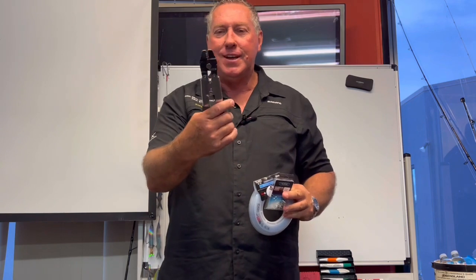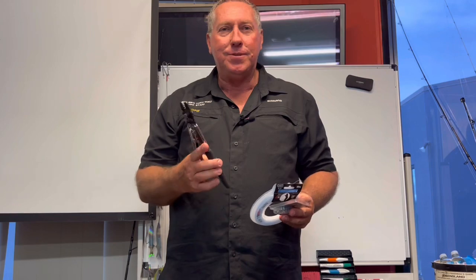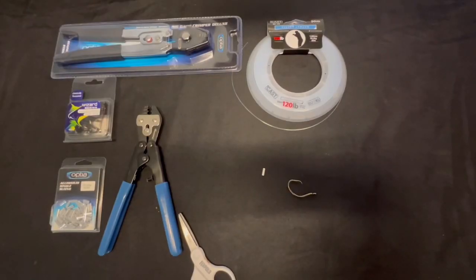You can use crimping pliers for rigging up any live baits or just lures, a lot of different types of things you could use it on. Okay, let's run through the gear we're going to use to do the crimp up.